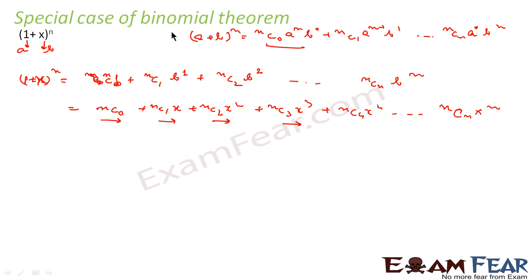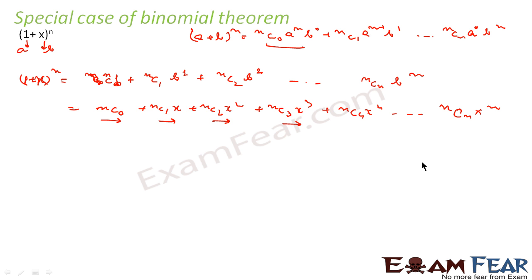You need not remember all these patterns individually — if you remember the original formula that is more than enough. However, if you want to solve questions fast, you should remember these shorter formulas. For (1 + x)^n, the short form is nc0 + nc1·x + nc2·x^2 + nc3·x^3 and so on.